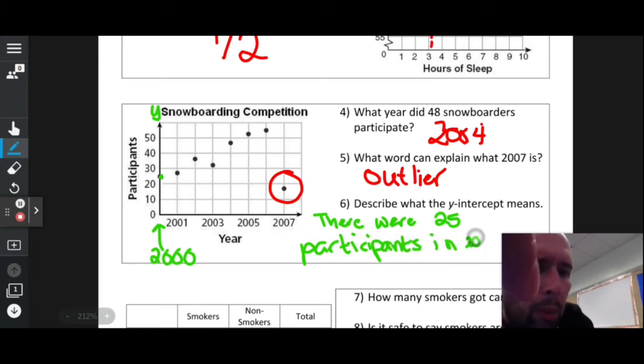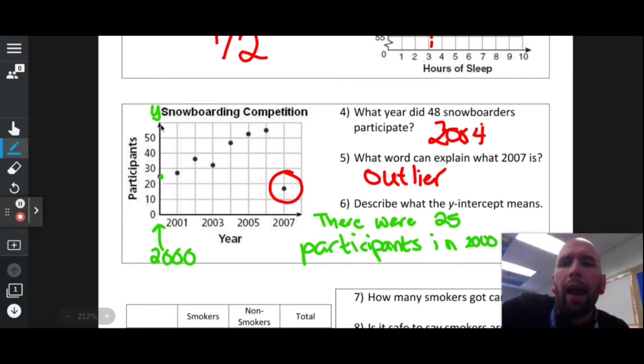Remember that your y-intercept is wherever your line or data crosses the y-axis. This dot is at 25 for participants and we had to say 2000 for the year. So what does the y-intercept mean? It means that there were 25 participants in the year 2000.